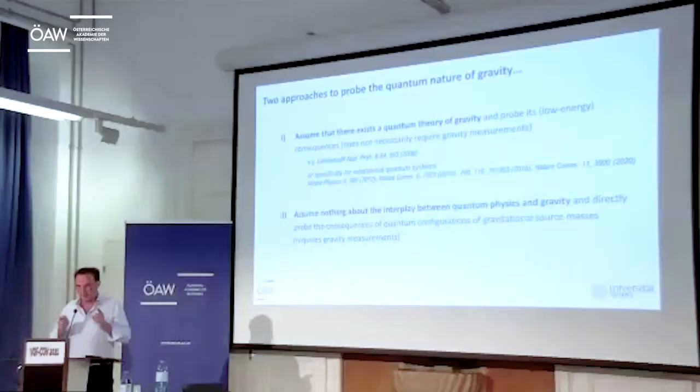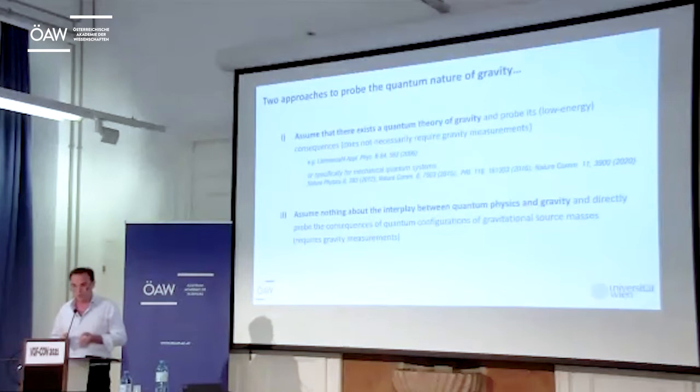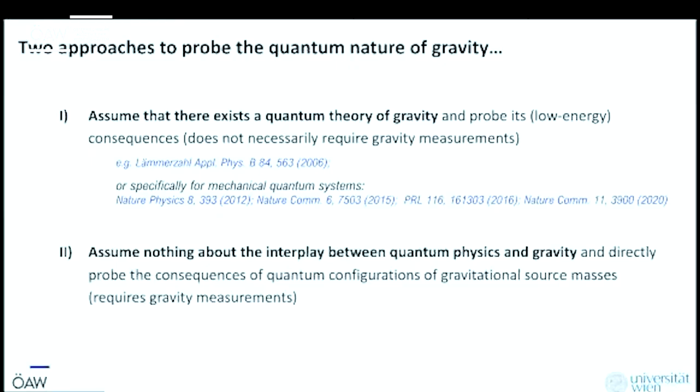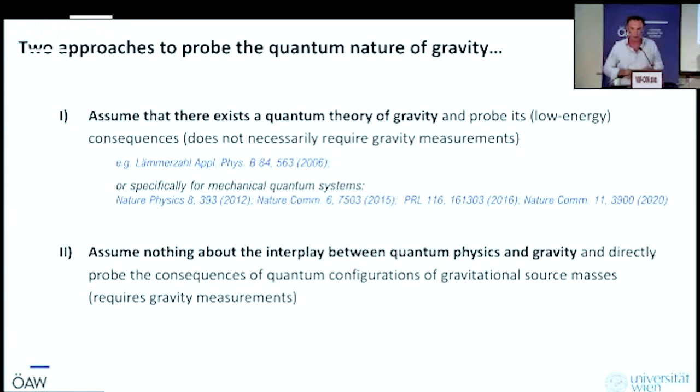How do we approach this question of the quantum nature of gravity? First of all, just be reminded, we have no experiment today that answers the question whether gravity requires a quantum description. We have lots of quantum theories of gravity, but no experiment that tells us whether these theories are actually necessary to describe how nature does it. Currently, if you look in literature, there are essentially two approaches.